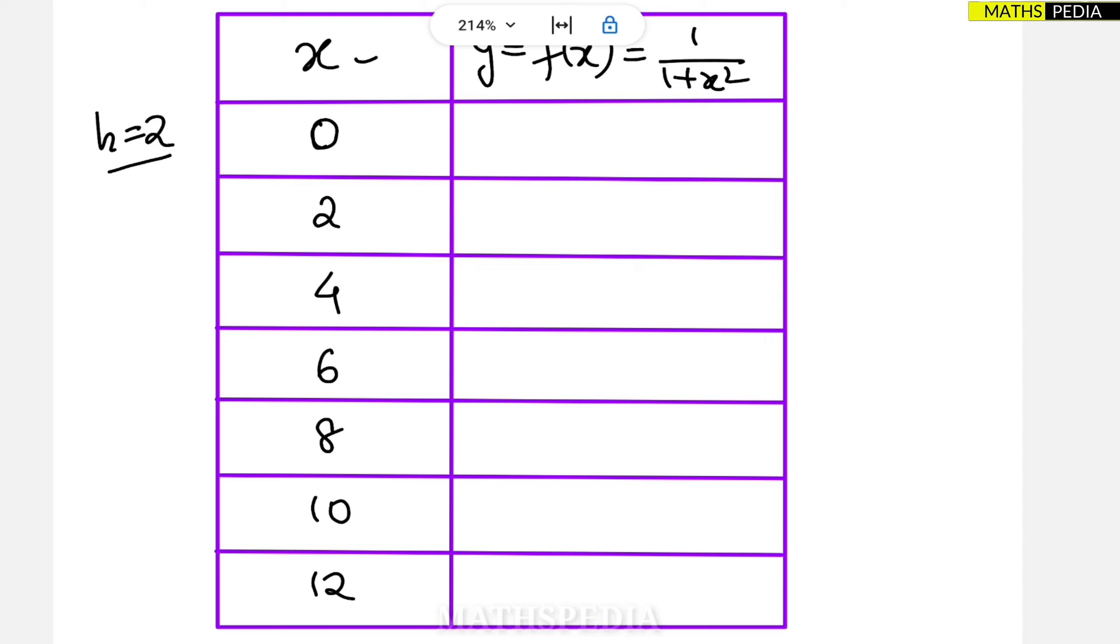So first value of y table will denote y0. So we have to take 1 by 1 plus, in place of x we will put 0. So 0 square, so answer will be 1, which is nothing but y0. Next, 1 by 1 plus 2 square, which will be 1 by 1 plus 4, which is equal to 1 by 5, which is equal to 0.2, which is denoted by y1.